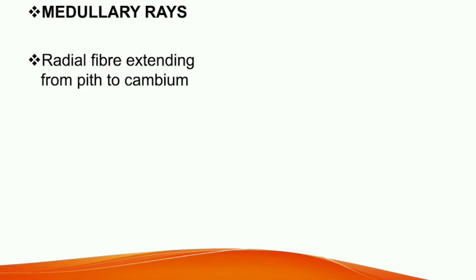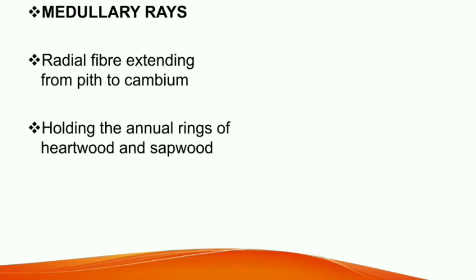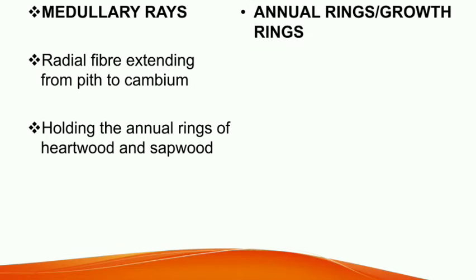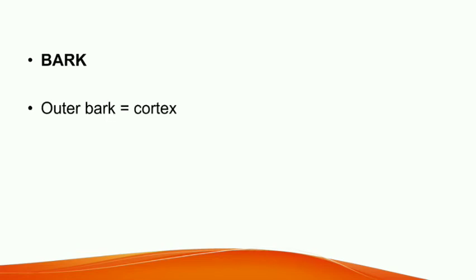Next is medullary rays. Radial fibres extending from the pith to the cambium layer are called medullary rays. They hold the annual rings of the heartwood and the sapwood in position, thereby imparting some strength to it. Next is the annual rings or growth rings. By counting the annual rings, we can determine the age of a particular tree. Next is the bark — a protective layer provided around the cambium layer. Bark can be classified into two: the outer bark (cortex) and the inner bark (bast).